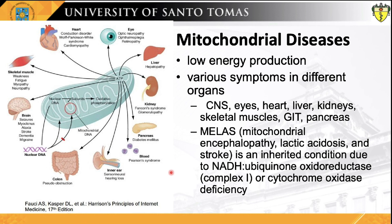Mitochondrial diseases are long-term, genetic, often inherited disorders that occur when mitochondria fail to produce enough energy for the body to function properly. They can affect almost any part of the body, including the cells of the brain, nerves, muscles, kidneys, heart, liver, eyes, ears, or pancreas. This is just a brief introduction to the reality that mitochondrial diseases exist; they will be covered more thoroughly in your journey through medical school.